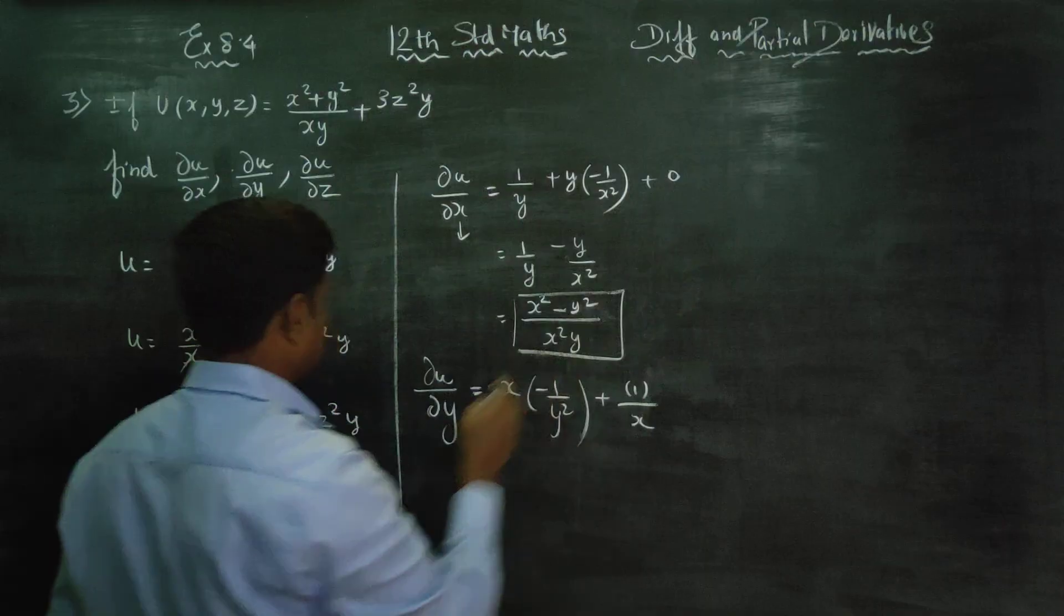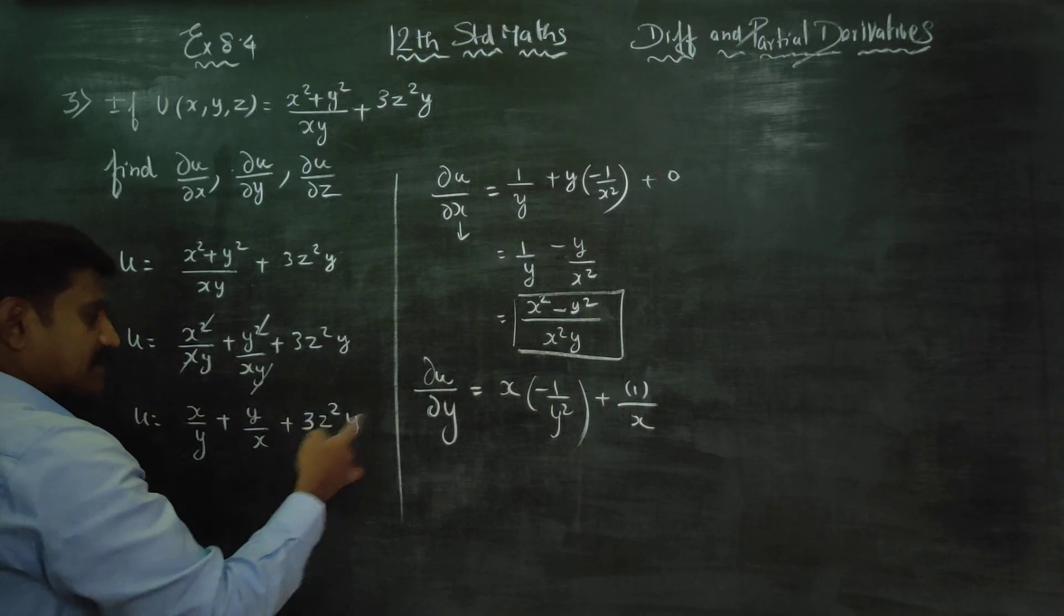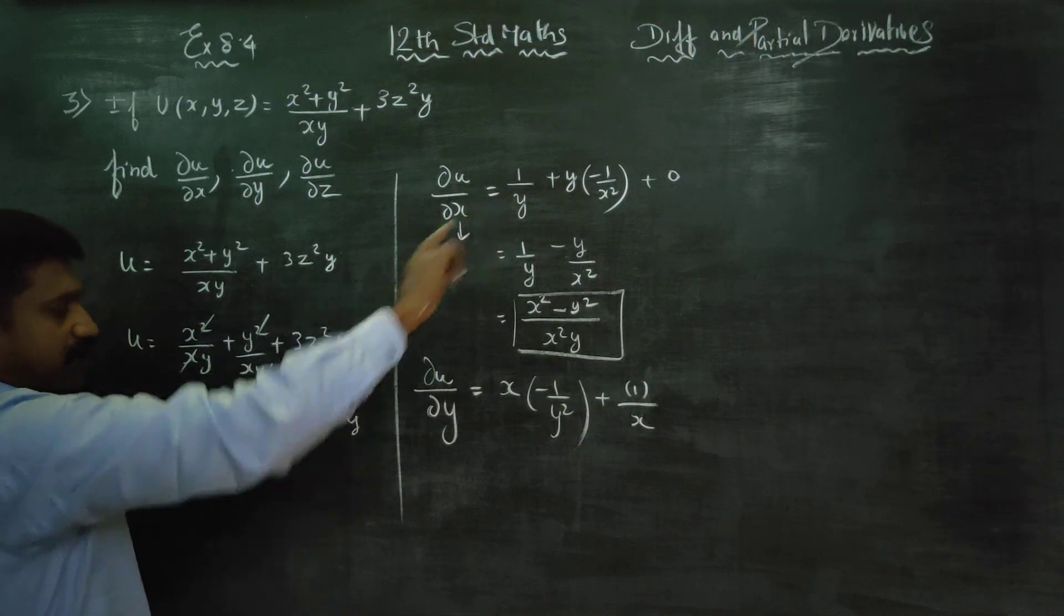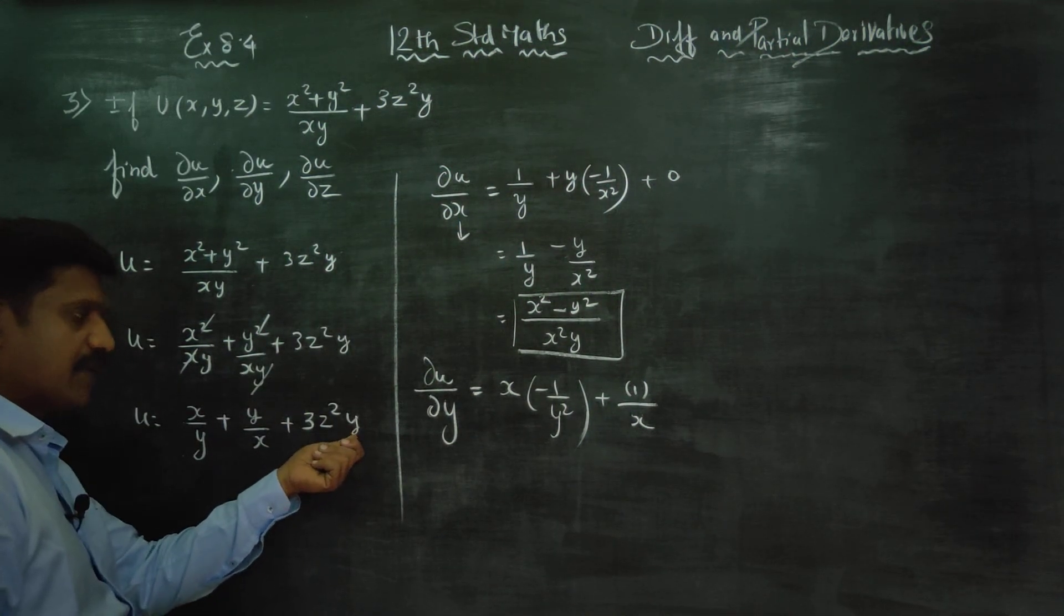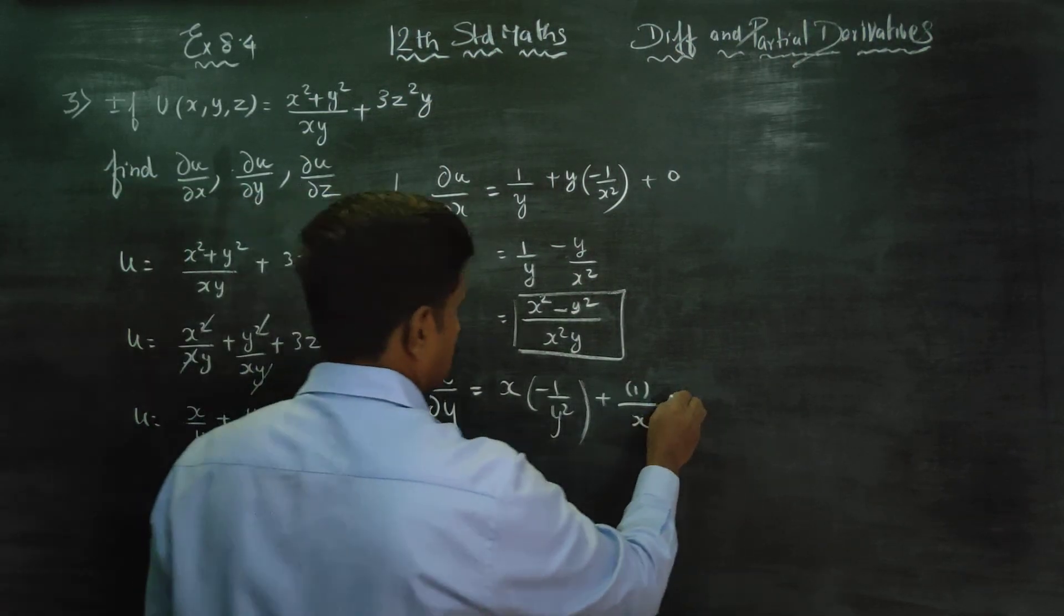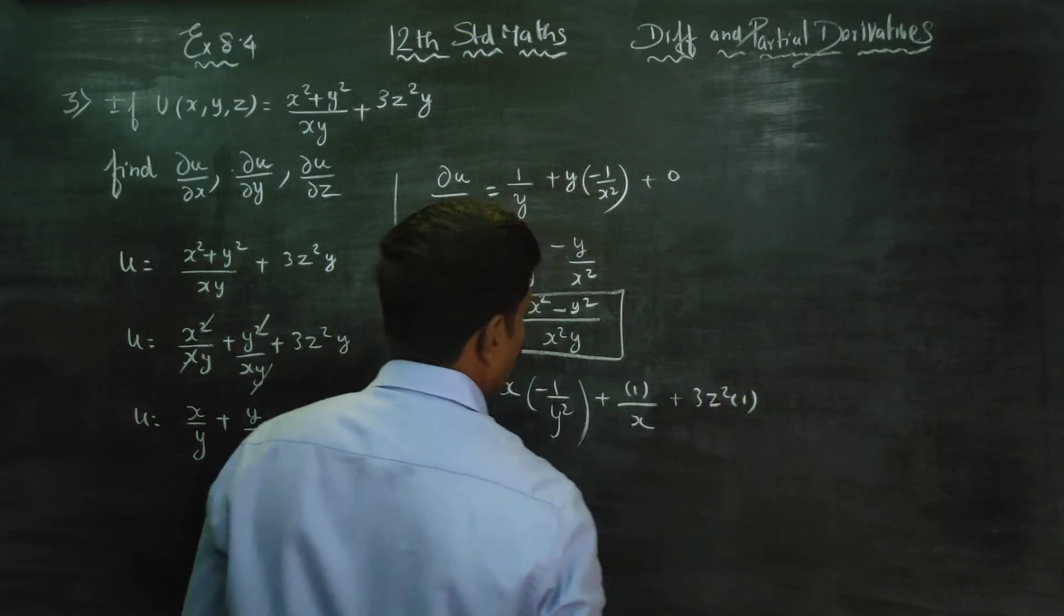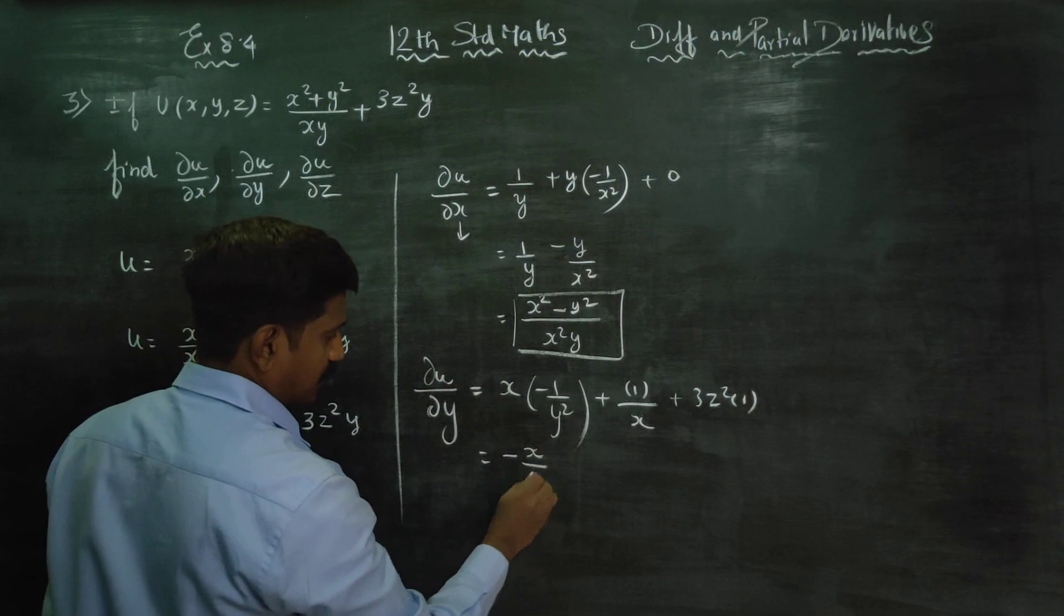When differentiating the first term with respect to y, since there's no y in x, that becomes 0. For the second term, y differentiates to 1, so we get x by y square plus 1 by x plus 3z square into 1.